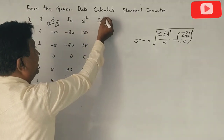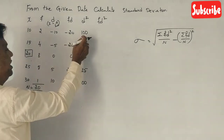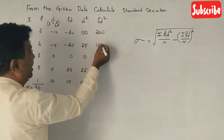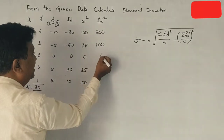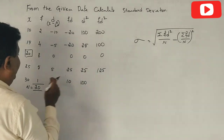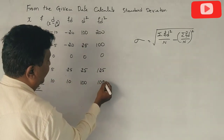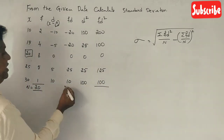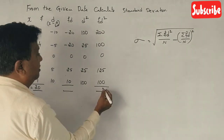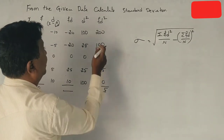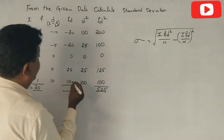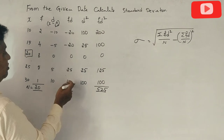What is fd squared? 2 into 100 is 200. 4 into 25 is 100. 8 into 0 is 0. 25 into 5 is 125. 1 into 100 is 100. So the total fd squared sum is 525.